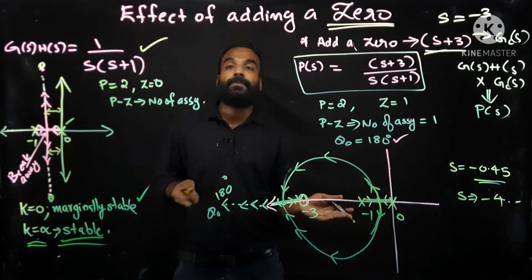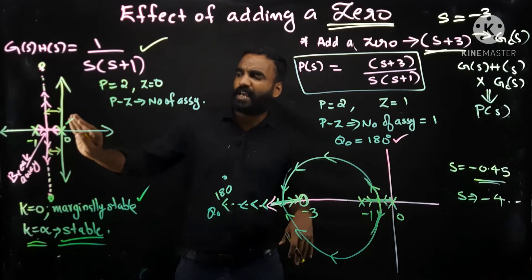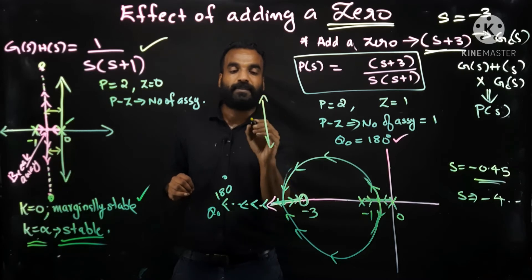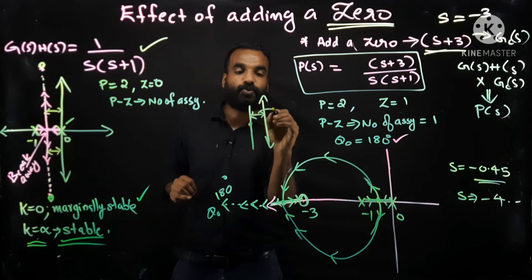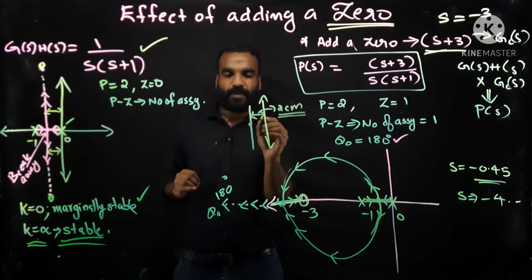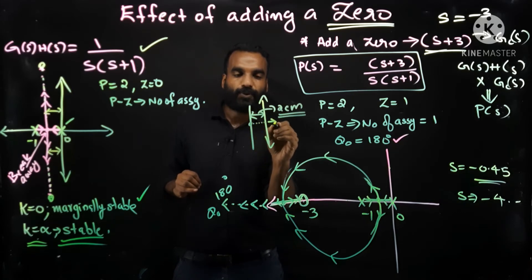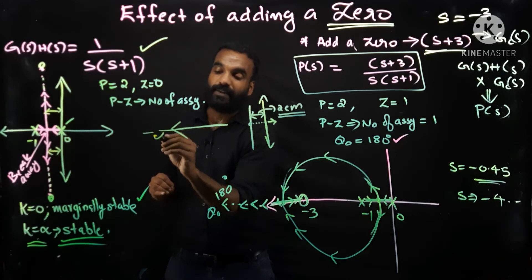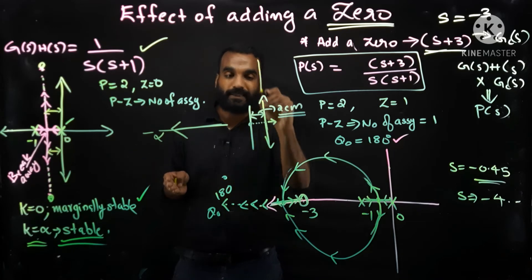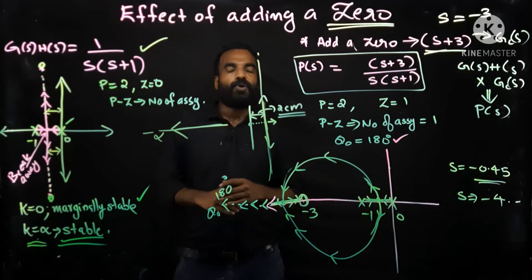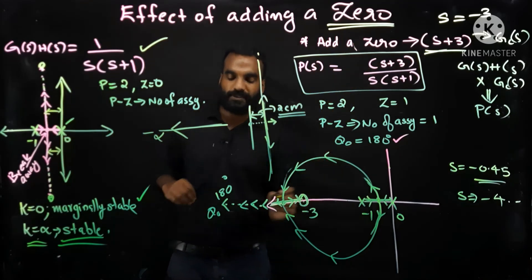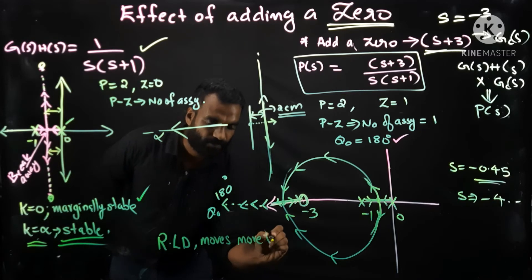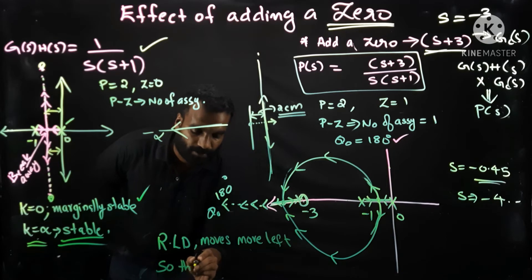In the previous case the infinite poles were somewhat closer to the imaginary axis, but now the pole at infinity is much further from the imaginary axis. This is the stability margin concept — how far you are from the imaginary axis determines your margin of stability. If you are close to the imaginary axis, stability margin is small. Adding a zero causes the root locus diagram to shift more to the left, increasing the stability margin.